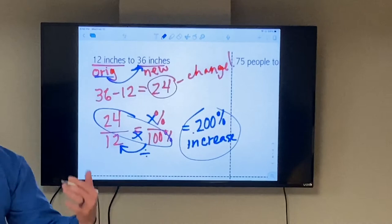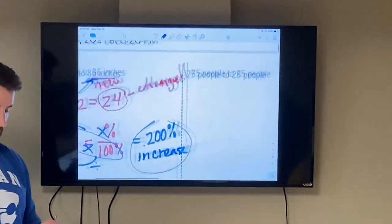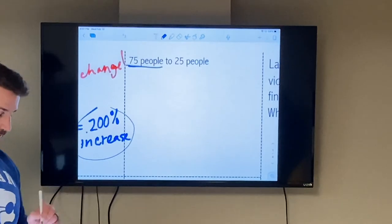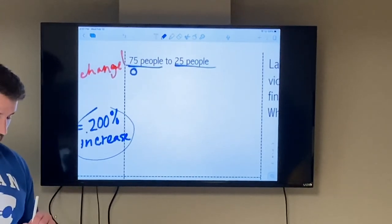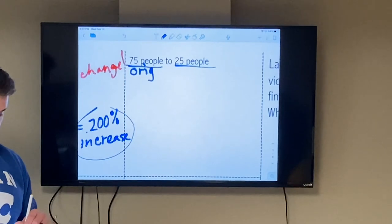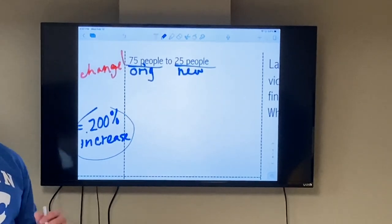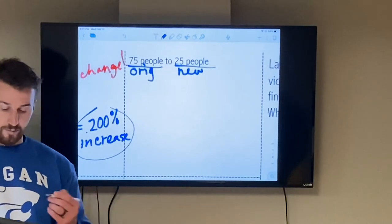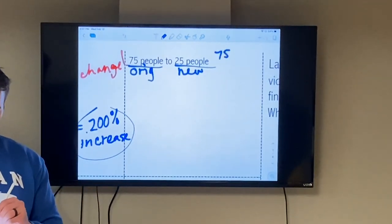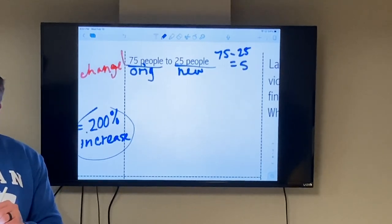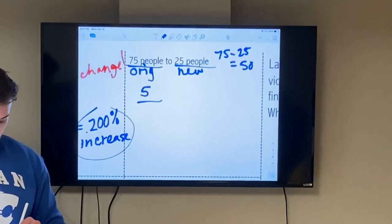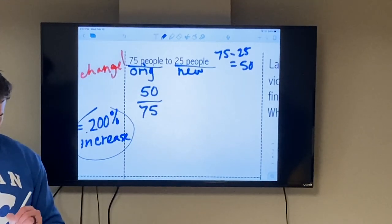Second example: 75 people to 25 people. So the first is always the original amount, the second is always the new. Now since my amount of change has to be positive, I'm going to subtract the larger by the smaller every single time. So 75 take away 25 gives me a change of 50. So now I can set up my percent proportion of 50, which is the change, over the original.